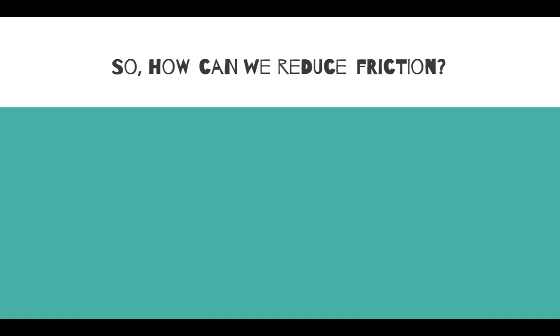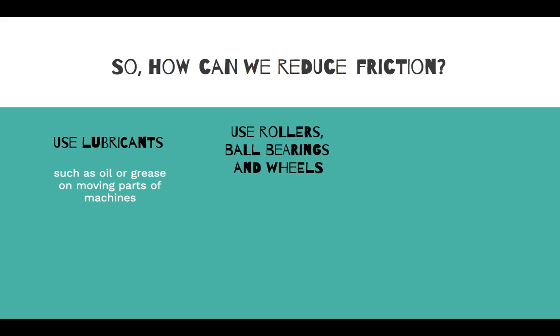So, how can we reduce friction? We can use lubricants, like oil or grease, on moving parts of machines. We can also use rollers, ball bearings and wheels, which are often used in conveyor belts and furniture.